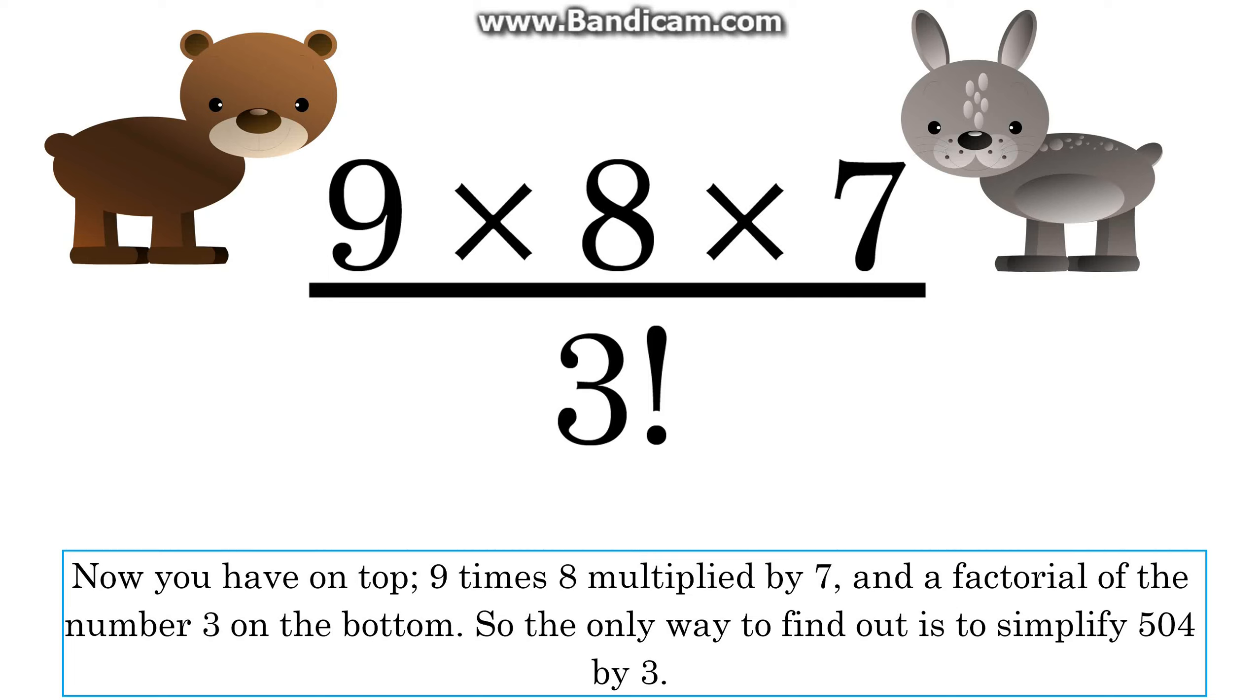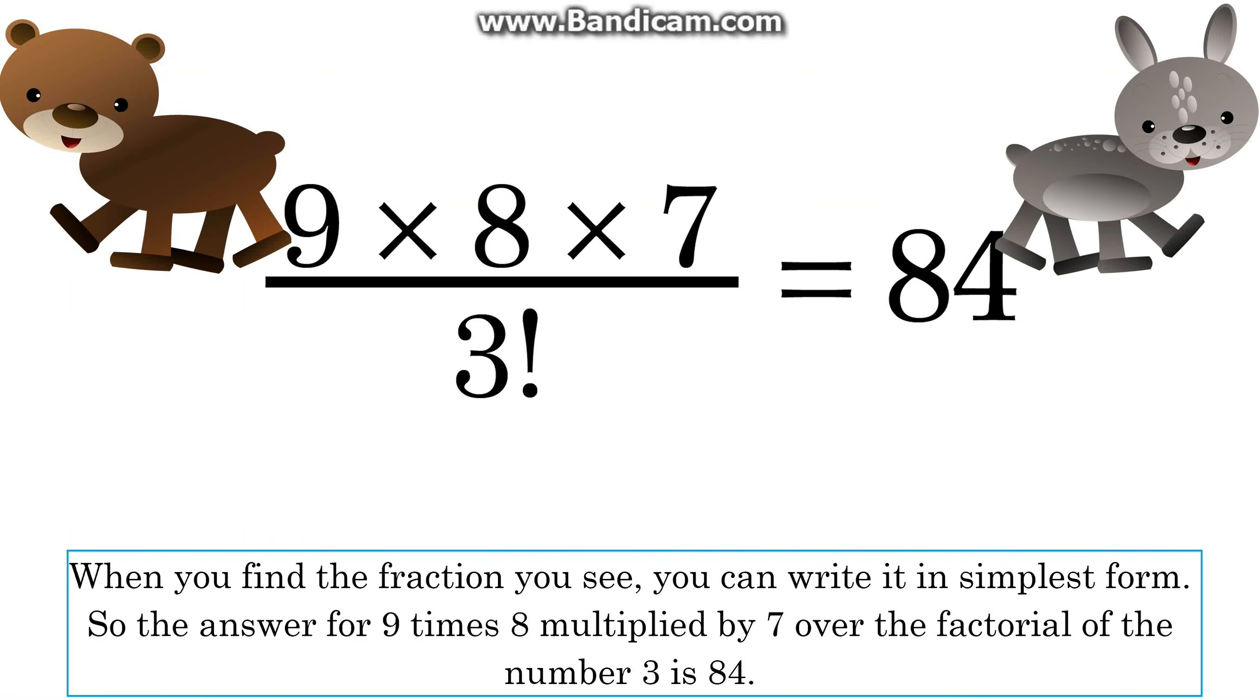So the only way to find out is to simplify 504 by factorial 3. When you find the fraction you see, you can write it in simplest form. So the answer for 9 times 8 multiplied by 7 over the factorial of the number 3 is 84.